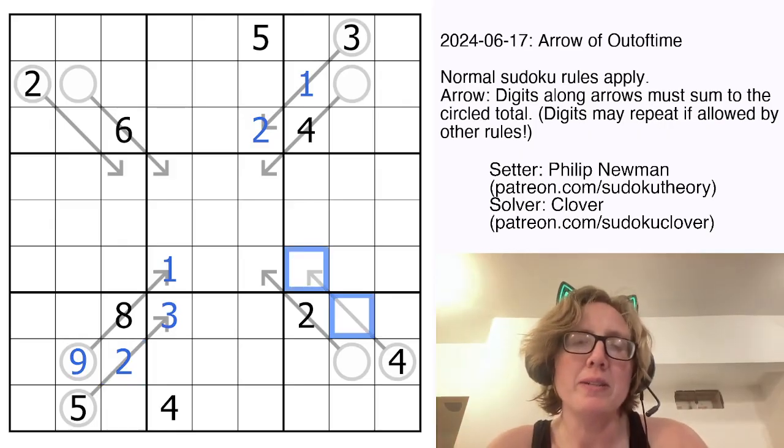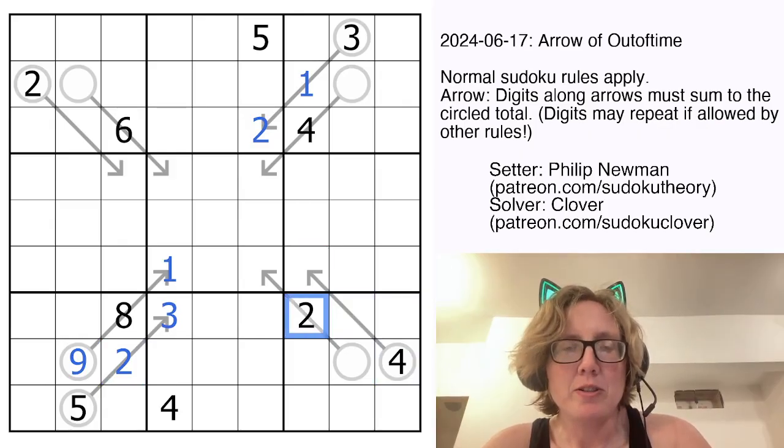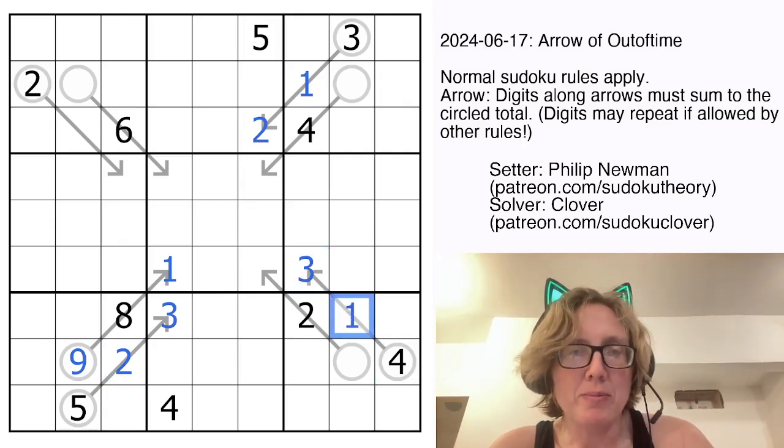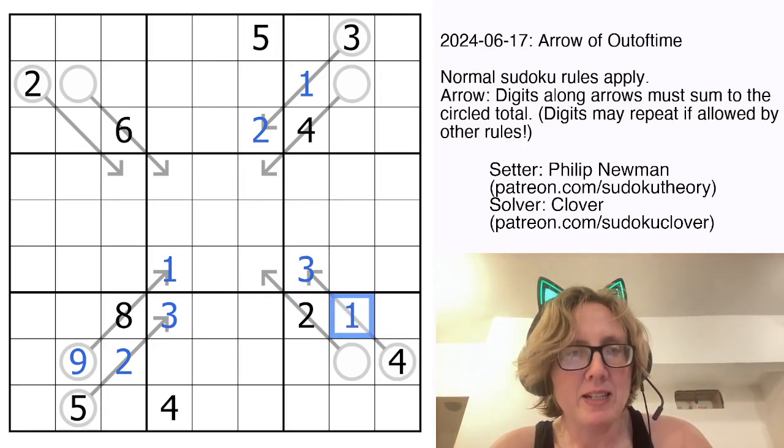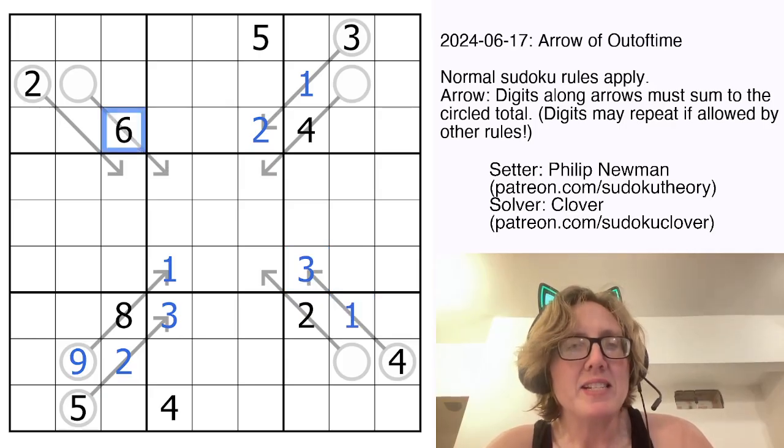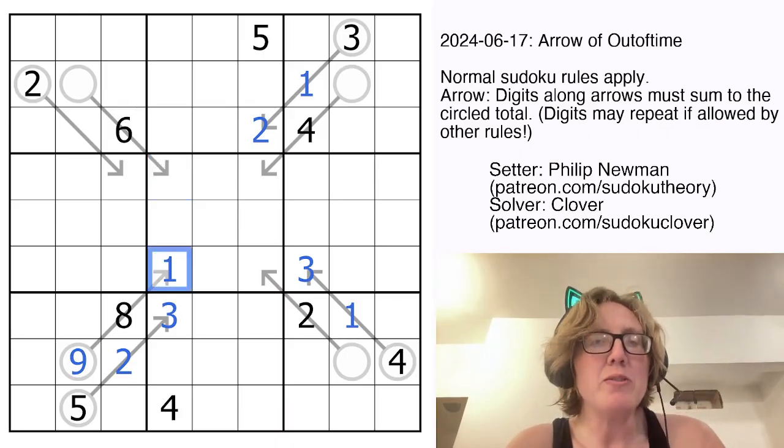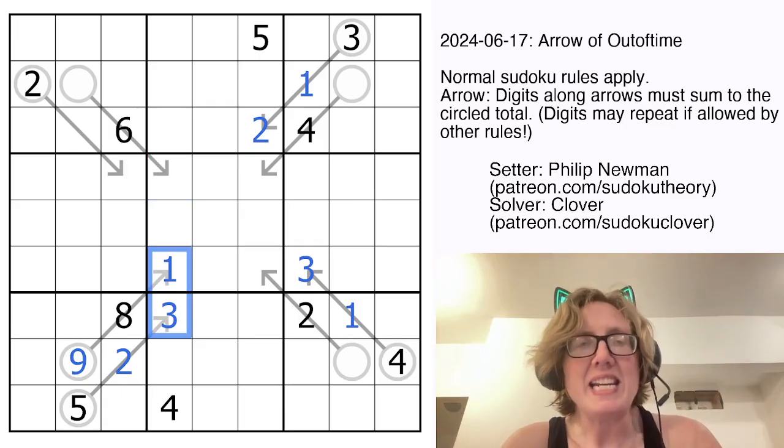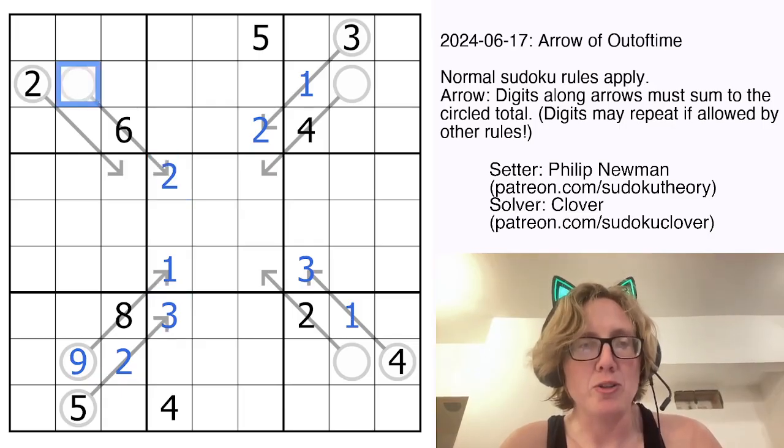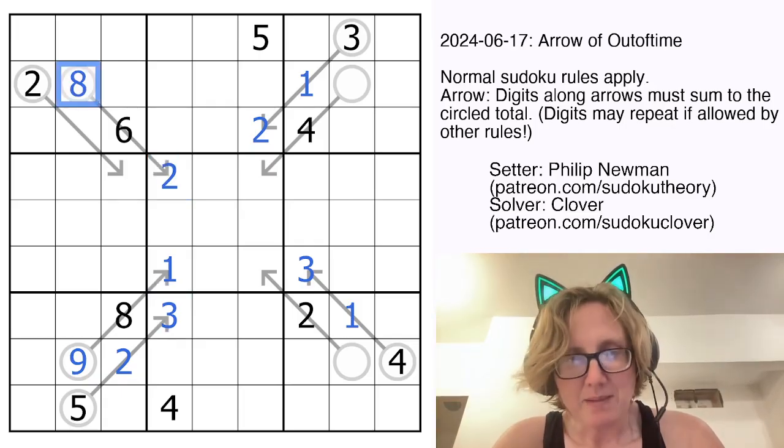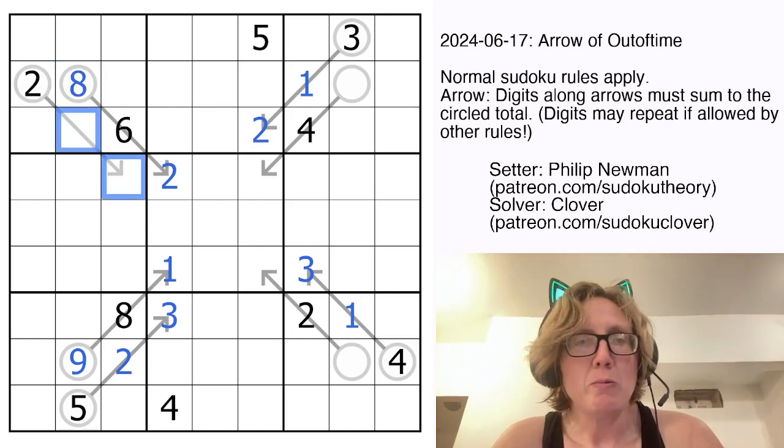4 on an arrow is either 1 plus 3 or 2 plus 2. 2 plus 2 is out, because there's a 2 that actually sees both of those cells, so this will be 1 plus 3, which will go this way around. Whatever this is, is something that is summed with 6, so the biggest number we could possibly sum with a 6 here would be 3. 6 plus 3 is 9, but we can't use 1, we can't use 3, because those are already in column 4. So this will be 6 plus 2 sums to 8. 2 will always be 1 plus 1.